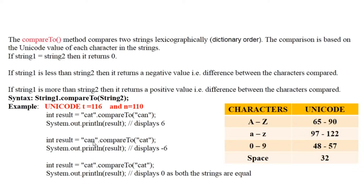Similarly, if we bring string two first and string one on the other side, we are now comparing "can" with "cat". 'c' with 'c', 'a' with 'a', then 'n' and 't'. 'n' has Unicode 110 and 't' has Unicode 116, so the first string is less than the second string, and it will return a negative value — minus 6.